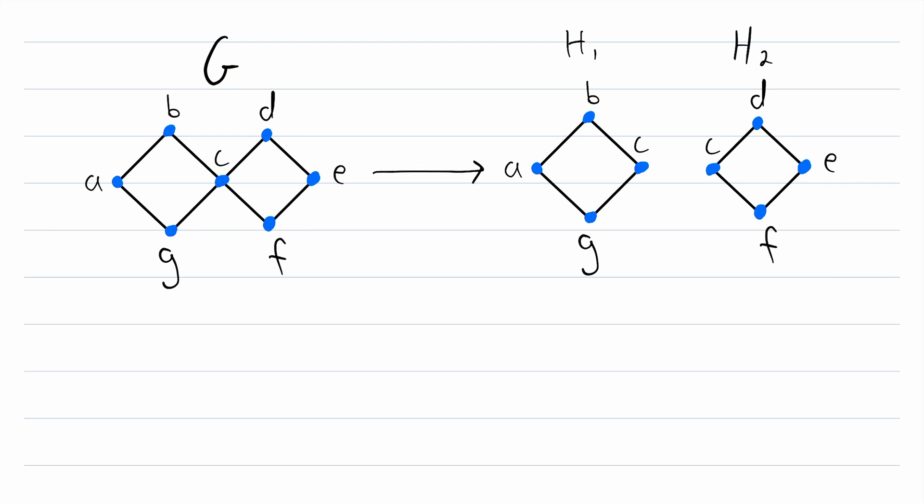Well, it turns out that it is. That's because, for starters, H1 and H2 are both subgraphs of G. Another important fact that has to be true is that when we union these two subgraphs together, we get the original graph G.